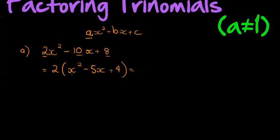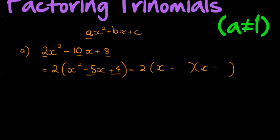Now we're working with a trinomial where the leading coefficient is equal to 1, and all I need to do is keep this 2 as a common factor in front the whole time. This goes into two brackets. What times what gives me positive 4, but I must get negative 5? Both must be negative, so the numbers are 1 and 4. And there I've factorized this trinomial that had a leading coefficient not equal to 1 by first common factorizing.